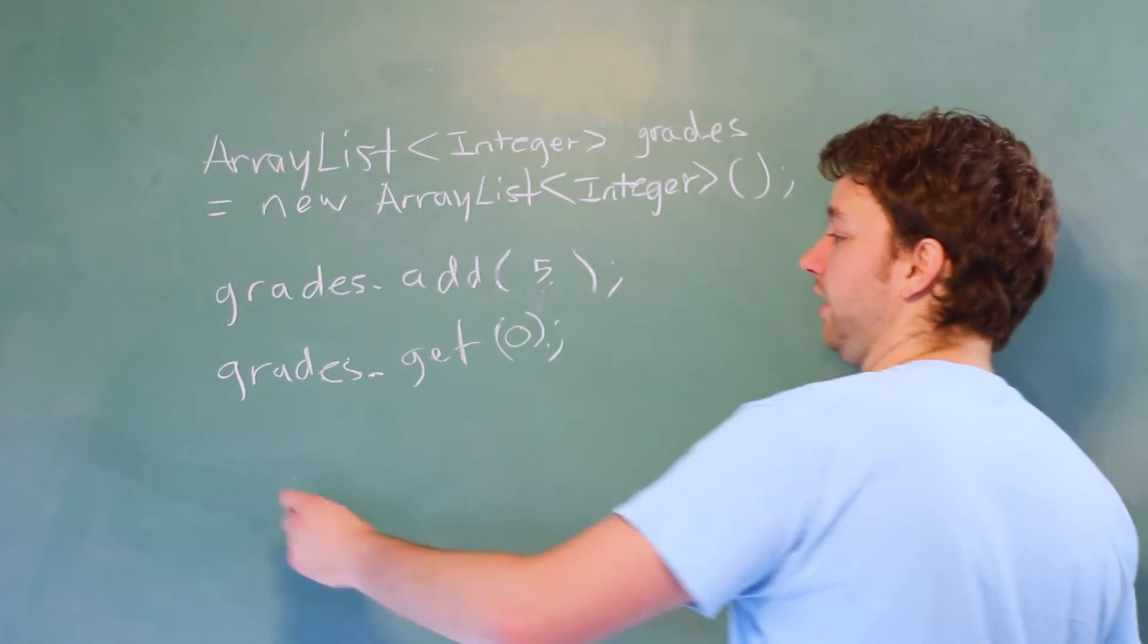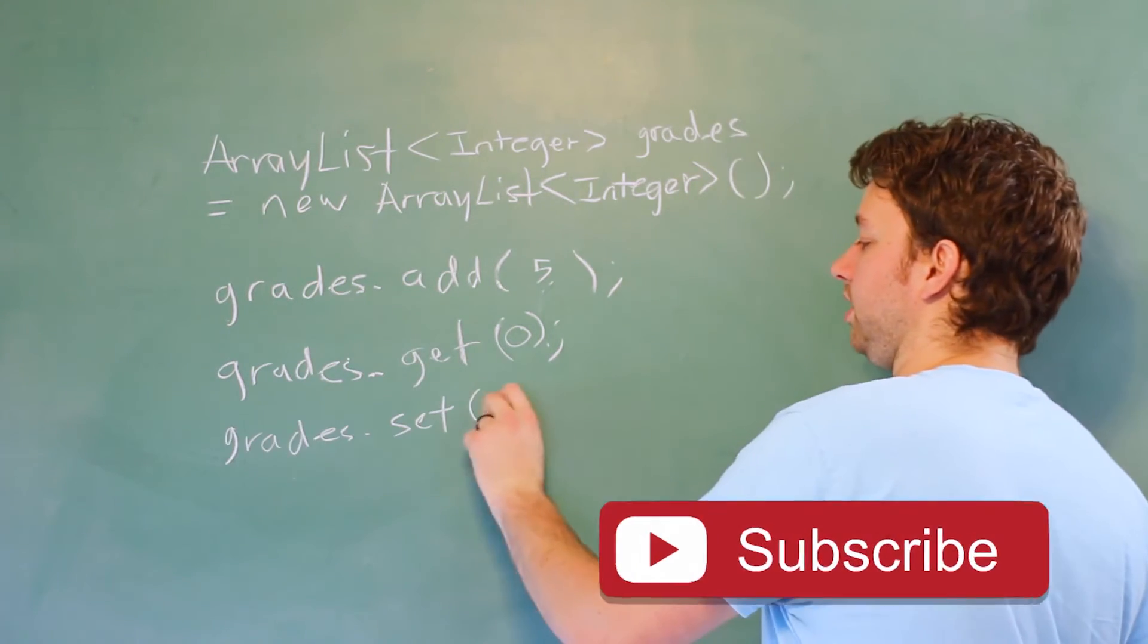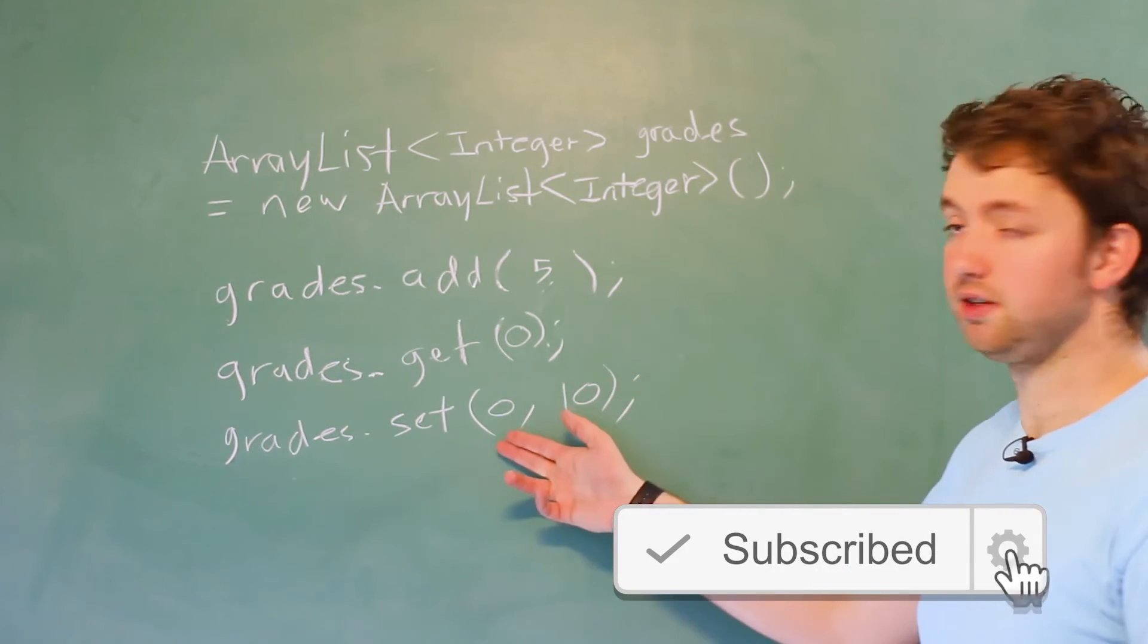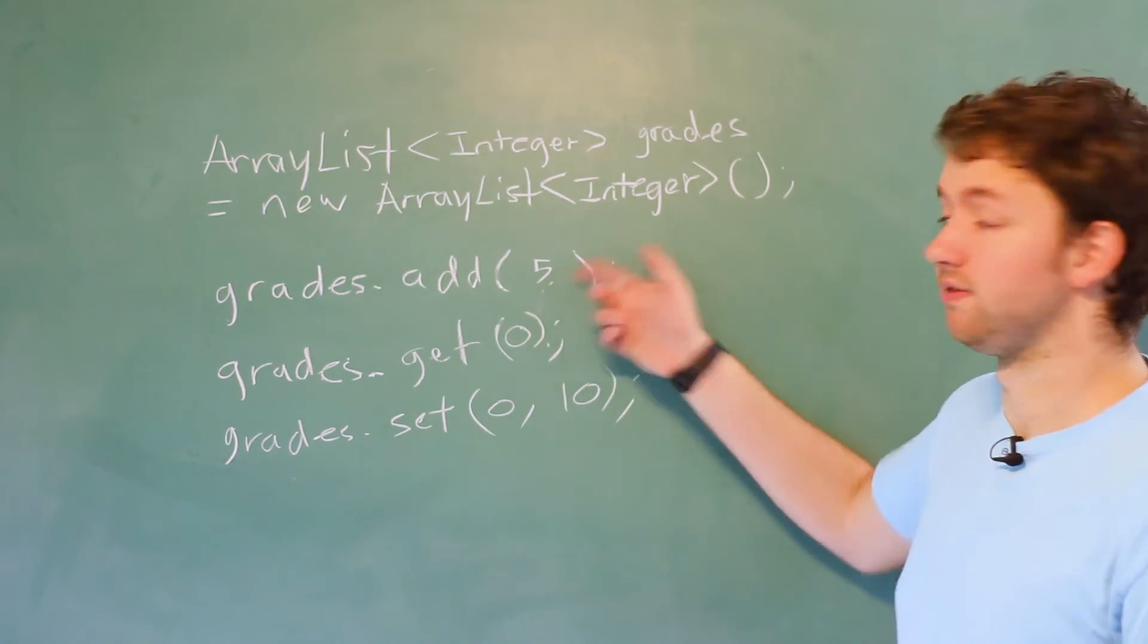If you want to update that spot, you can use grades.set, where you pass in the index, give it a new value such as 10, and you're good to go. That's going to update index zero, and it'll replace the value five.